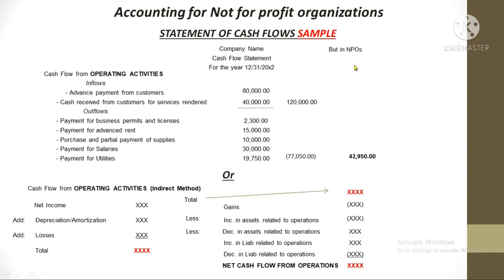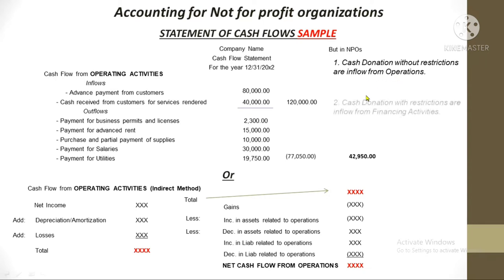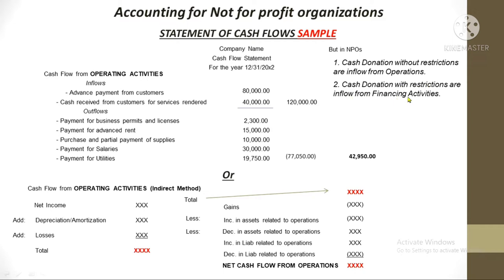However, there are two things unique to NPOs. Number one: cash donations without restrictions by the donor are considered as inflows from operations of the NPO. Number two: cash donations with donor restrictions — whether temporary or permanent — are recorded as inflows from financing activities of the NPO.